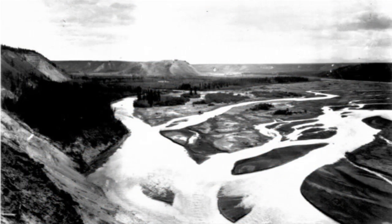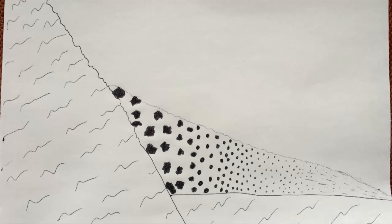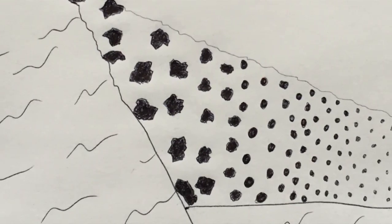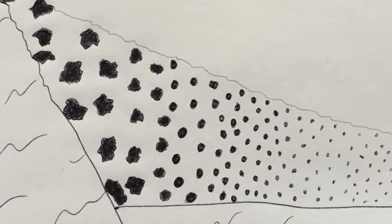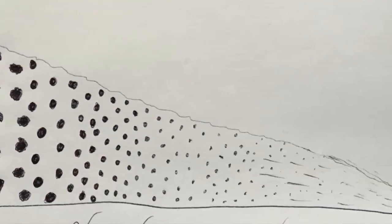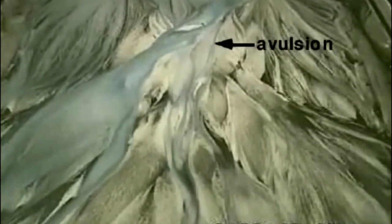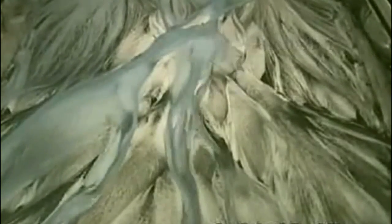The largest, most angular clasts are near the mountain source, and the smaller and rounder clasts deposit further and further from the mountain face. But don't think the stream spreads out in all directions simultaneously to make this fan shape — this is sediment dominated, not water dominated.